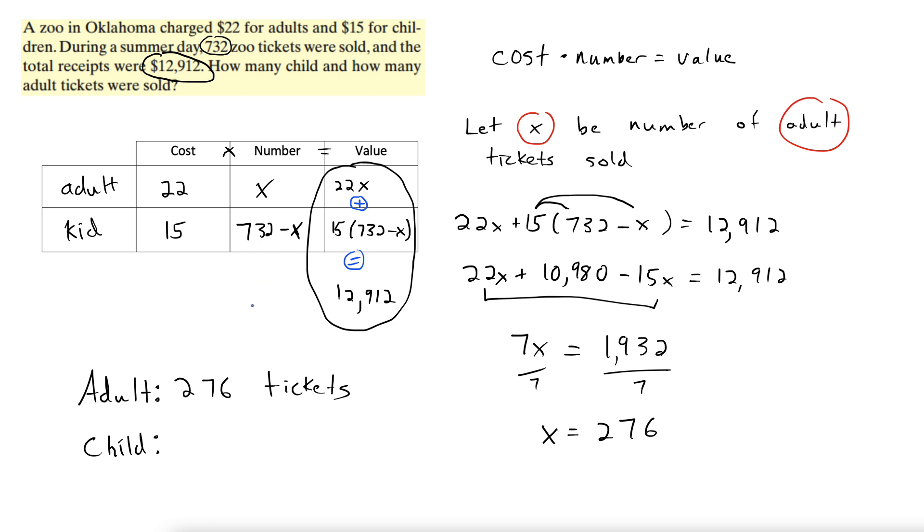So we're plugging in 276 for x, so it's 732 minus 276. Again with the calculator, 456. 456 tickets.